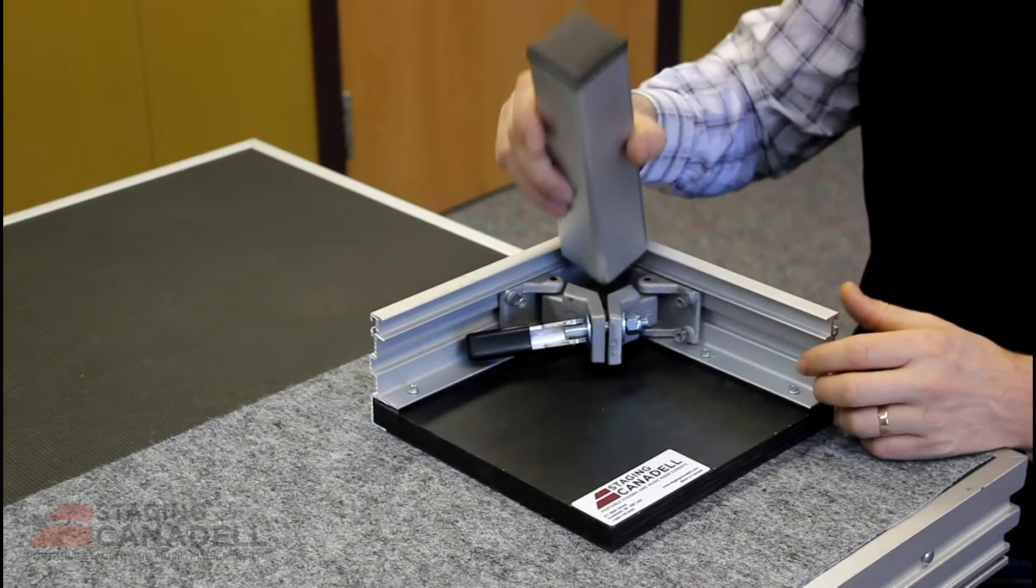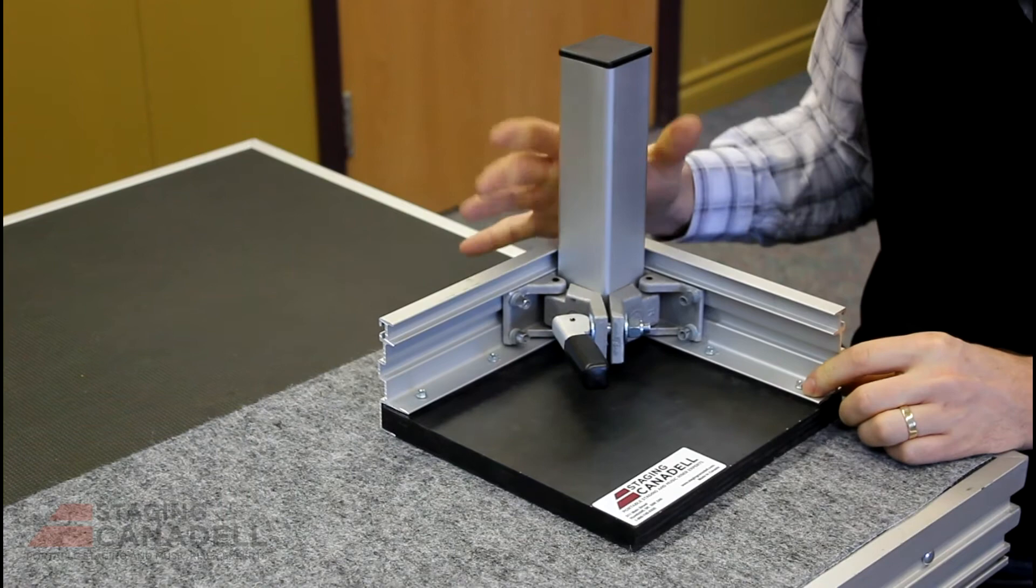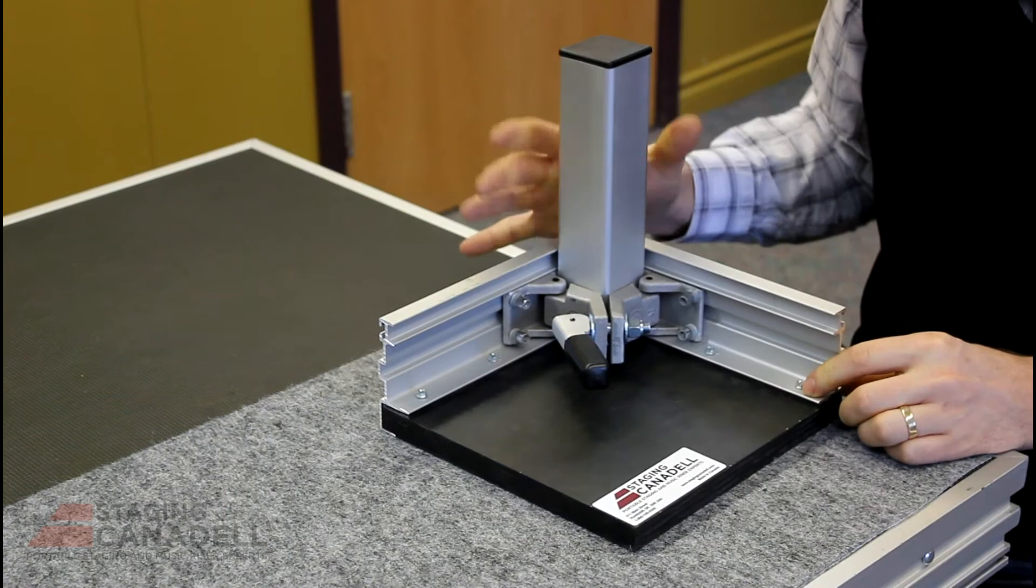Simply make sure the clamp handle is open as far as it can, insert the leg, slide it down to the bottom. Once you hear the click that it's hit the bottom, reach across, tighten the clamp handle and now your leg is in place.